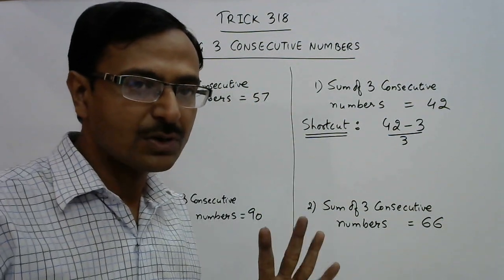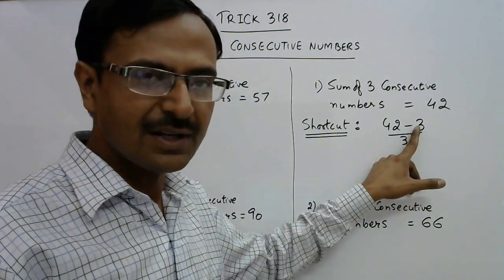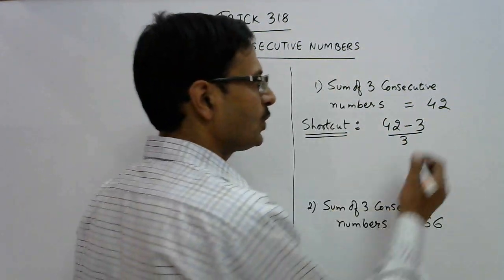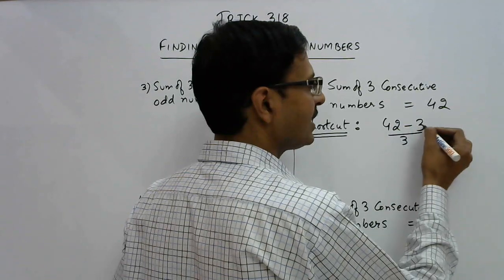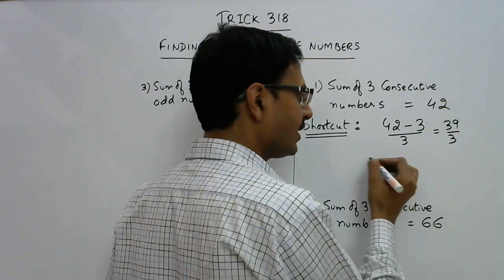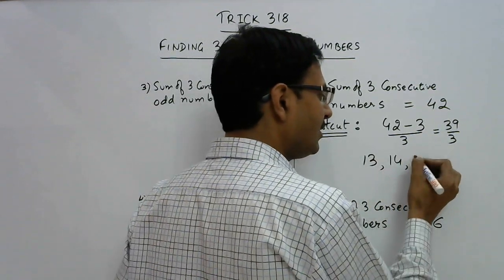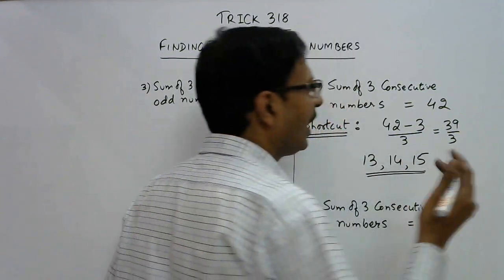If there are four consecutive numbers, then the method changes. So three consecutive numbers: subtract 3 and divide by 3. You get 42 minus 3 is 39, divide by 3. So the first number is 13, and the consecutive numbers are 14 and 15.